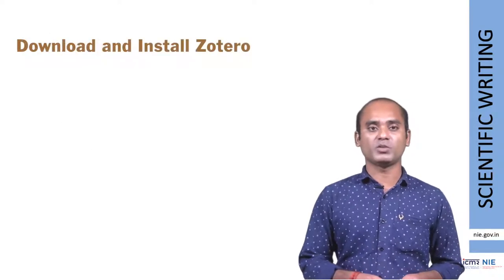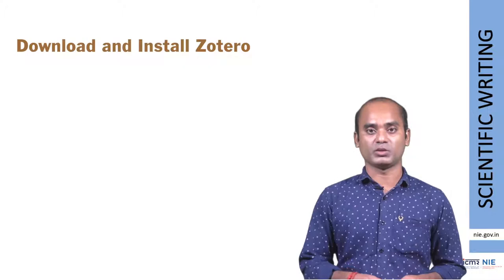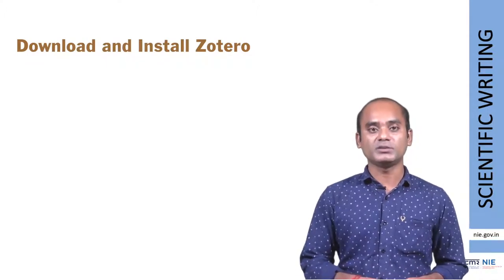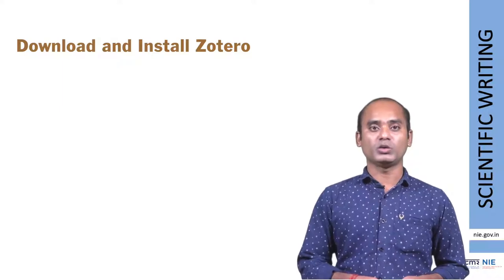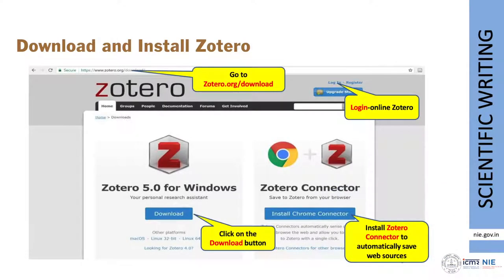The first important thing is we need to download and install Zotero to use all its features. Like any other software, go to Google search and type zotero.org/download. You will see two options: one is Zotero 5.0 for Windows, which is the application software — just click the download button and install it by clicking next, next, and finish. It will be stored in your C drive and you can see the icon on your desktop.